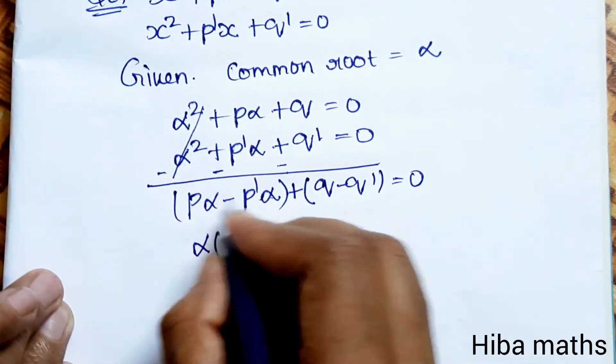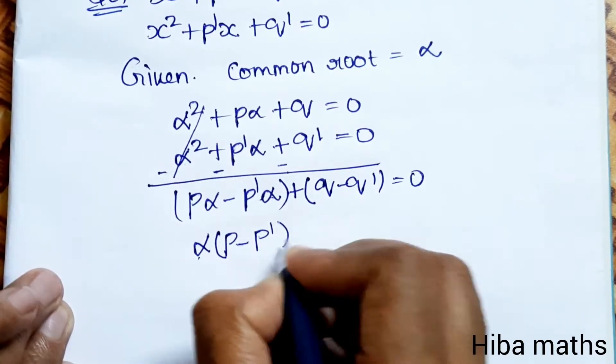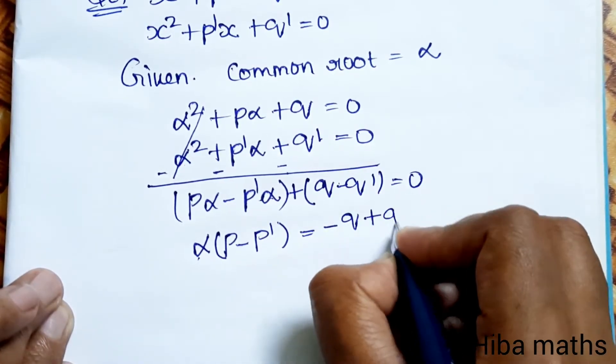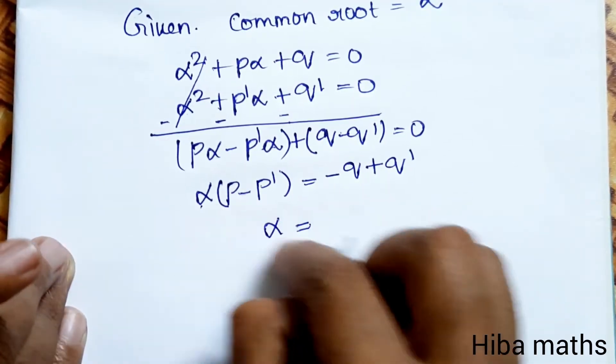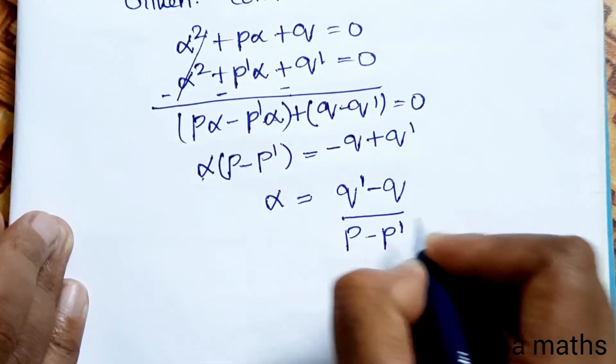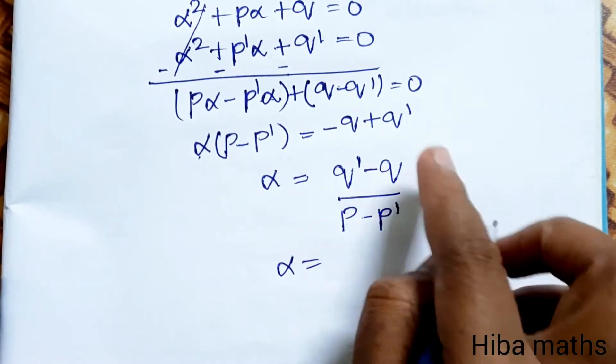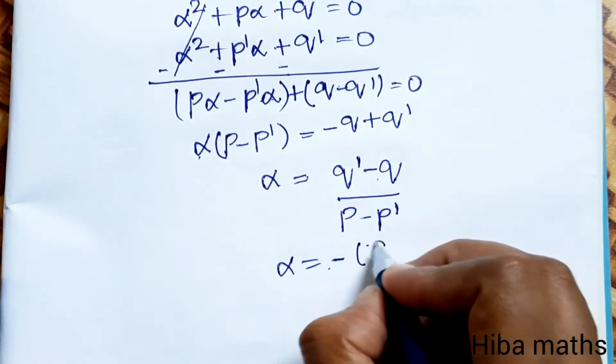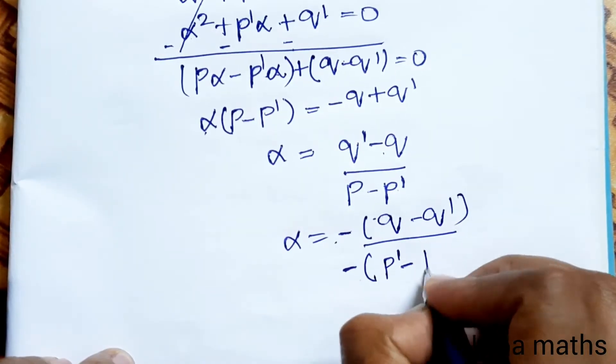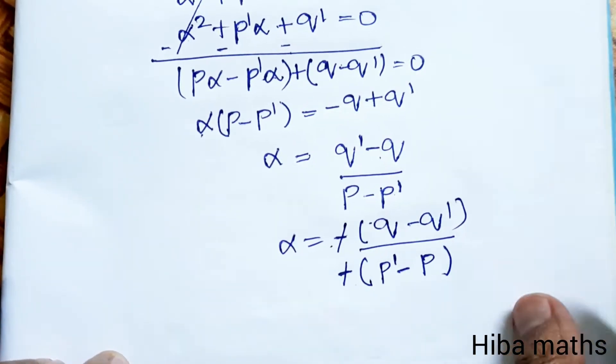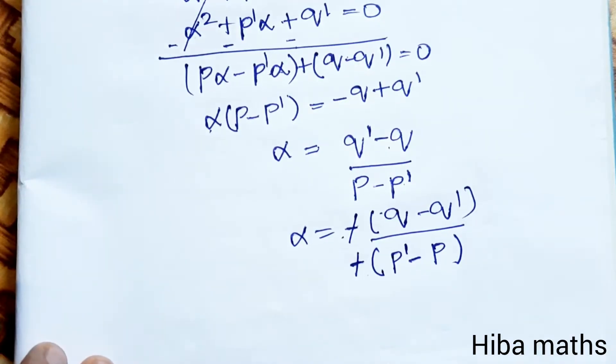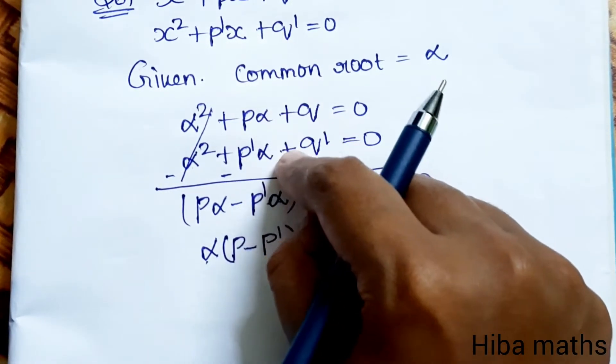Dividing and solving for α: (pα - p'α) = -(q - q'), so α(p - p') = q' - q. Therefore α = (q' - q)/(p - p'). From each equation we can remove the α², so now we have the first proof.